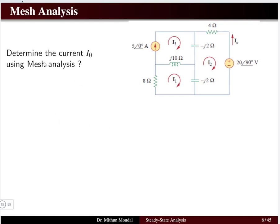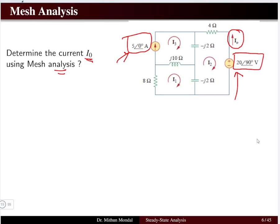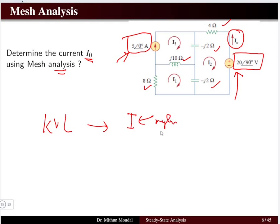Let us solve a problem: determine the current I_0 using mesh analysis. I_0 is the current coming out of the voltage source 20∠90°. The circuit has one voltage source 20∠90° and one current source 5∠0°. All elements are already in ohms, so no impedance conversion is needed. In mesh analysis the unknown variables are the mesh currents, and we take them in the clockwise direction.